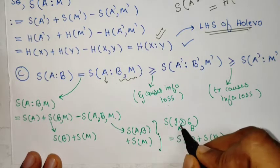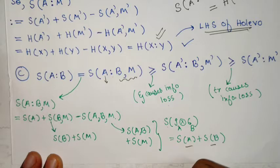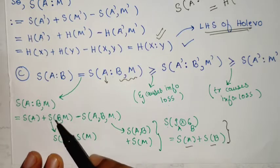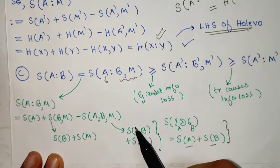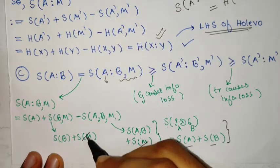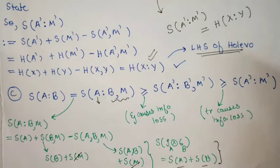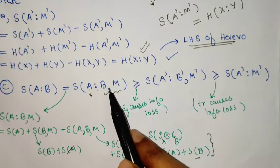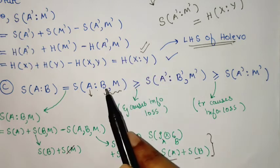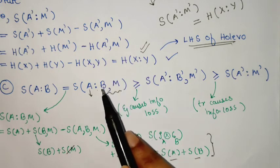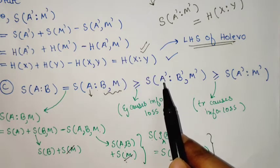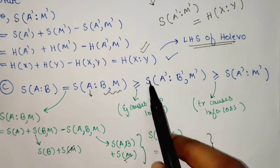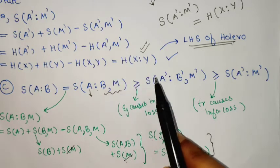Since entropy of a tensor product state is just a sum — as proven in the sub-additivity and joint entropy video — this can be written as a sum, and S(M) cancels from both sides, so the equality follows. From the next step there is an inequality because Bob applied the quantum instrument operation on his part, and applying any operation causes information loss or an increase in uncertainty, causing contraction of information measures.